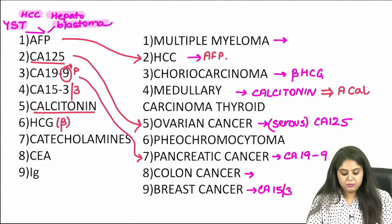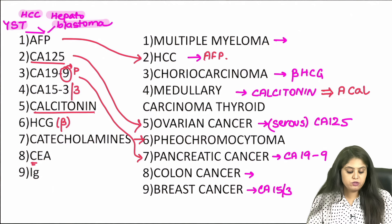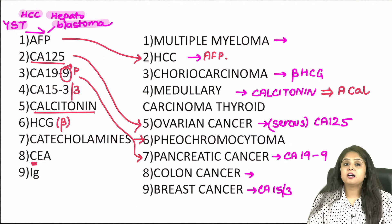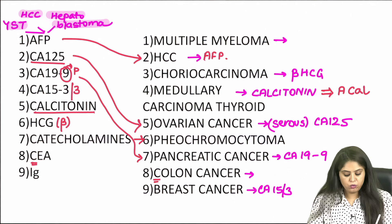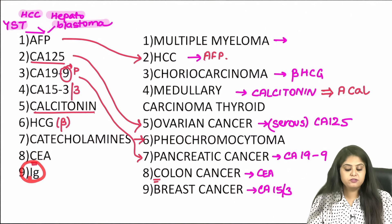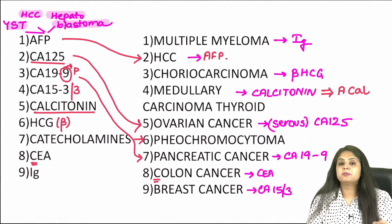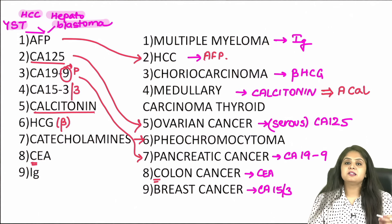Catecholamines are matched with pheochromocytoma. The next one is CEA — carcinoembryonic antigen — which is for colon cancer, a previous year surgery question. And lastly, immunoglobulins are made by plasma cells, so the cancer of the plasma cell — that is multiple myeloma — is matched with immunoglobulins. The tumor markers table is always important.